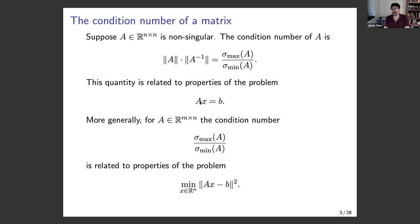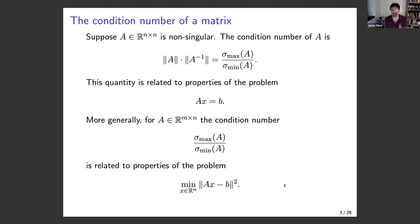That ratio of largest to smallest singular value is related to properties of the least squares problem — minimizing the norm of Ax minus b. The condition number is related to a number of properties of this problem, particularly perturbation results and algorithm behavior.